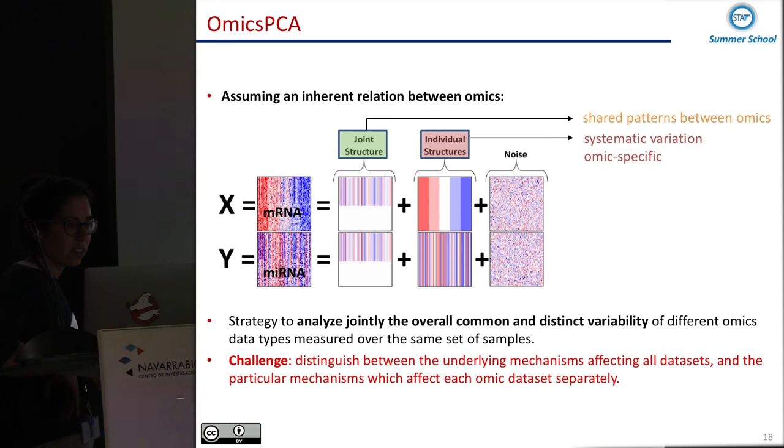So the strategy is to analyze jointly the overall common and distinctive variability of the different data sets. And what is very important is they should be the same samples. So we should have both omics from the same cases in both data sets. And the challenge is how we define this joint structure and the distinctive structure.